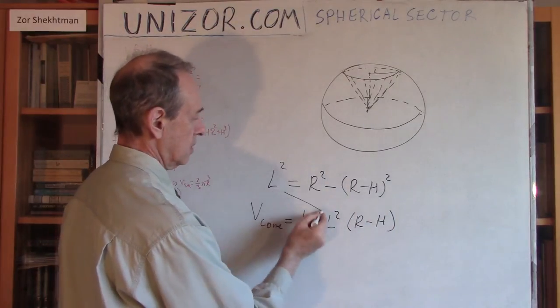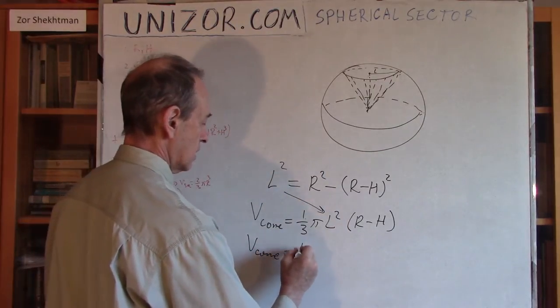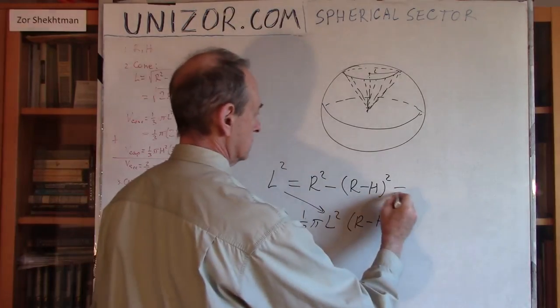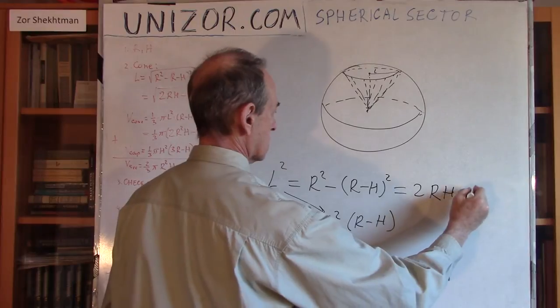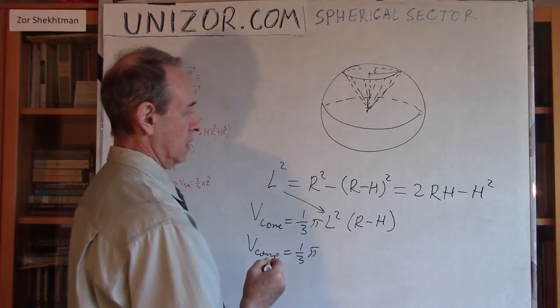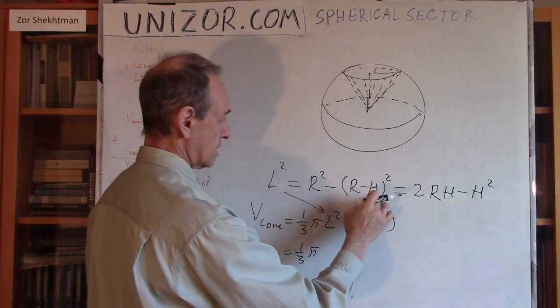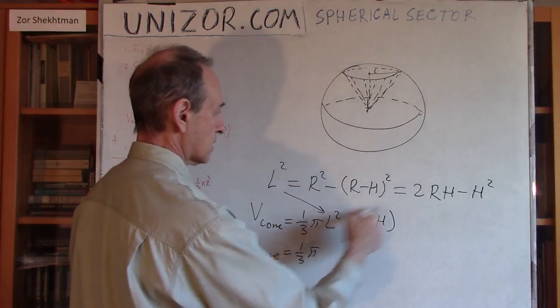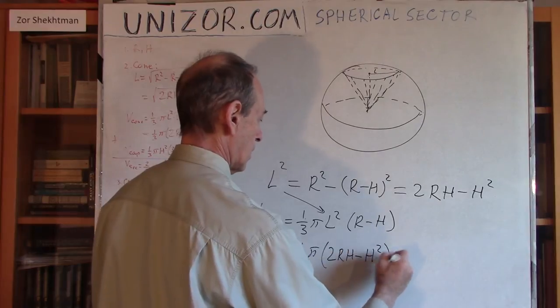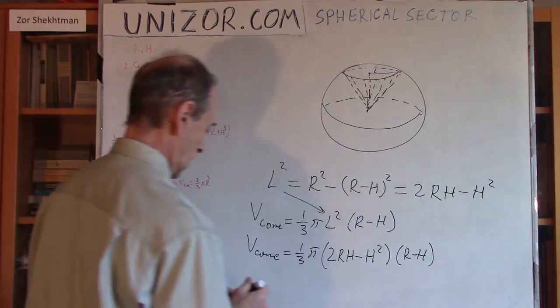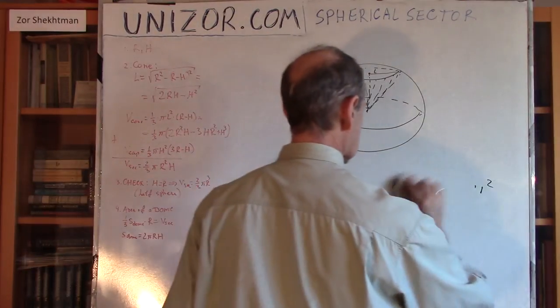Now, the altitude of this cone is basically R minus H, right? So, the volume of the cone is equal to one-third π L square, that gives me the area of the base of the cone, times its altitude, which is this. And if I will substitute L square here, I will get the volume of the cone is equal to one-third π. So, if I will open the parenthesis, it will be 2RH minus H square, right?